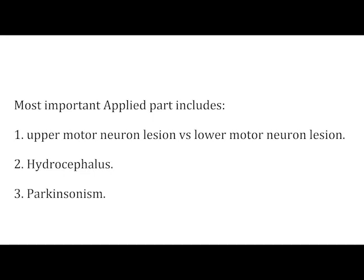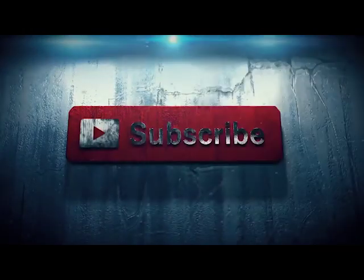For the clinical part, you should be ready with: upper motor neuron lesion versus lower motor neuron lesion and their differences, hydrocephalus, and Parkinsonism, which we already discussed. That's all you need to know for neuroanatomy. Please share your suggestions in the comments and subscribe to the channel for more essential information. Thank you and take care.